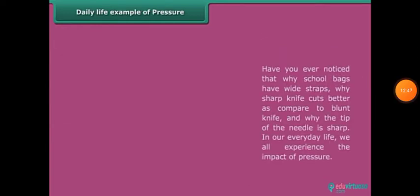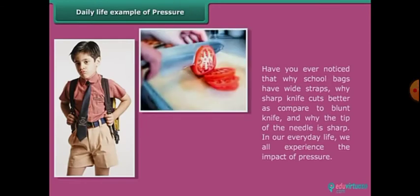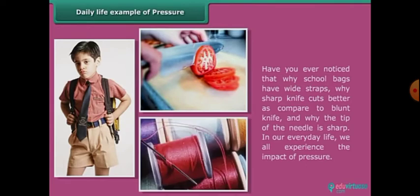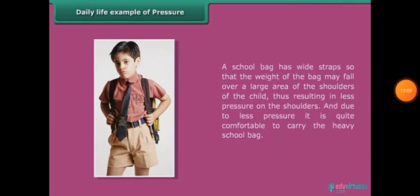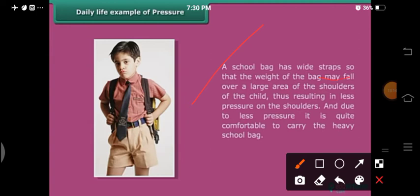Daily life examples of pressure: Have you noticed why school bags have wide shoulder straps? Why does a sharp knife cut better compared to a blunt knife? And why is the tip of a needle sharp? A school bag has wide straps so that the weight of the bag falls over a large area of the child's shoulder, resulting in less pressure on the shoulder. Due to less pressure, it is quite comfortable to carry the heavy school bag.